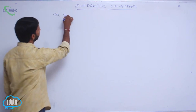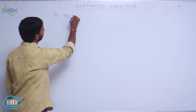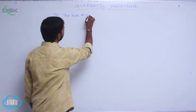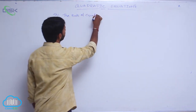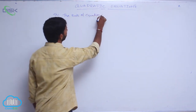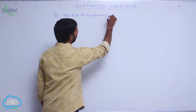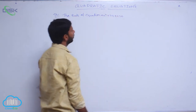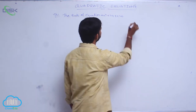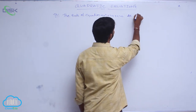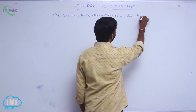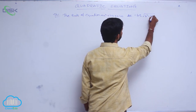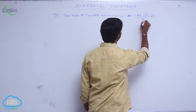The roots of equation Ax² + Bx + C = 0 are: x = (-B ± √(B² - 4AC)) / 2A.